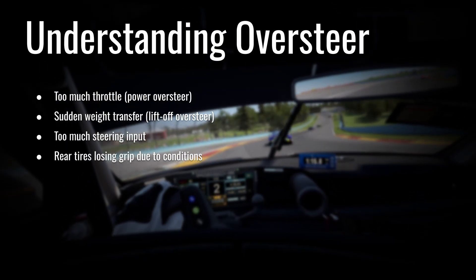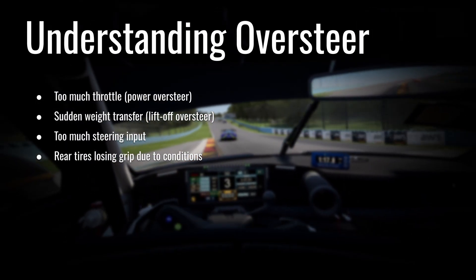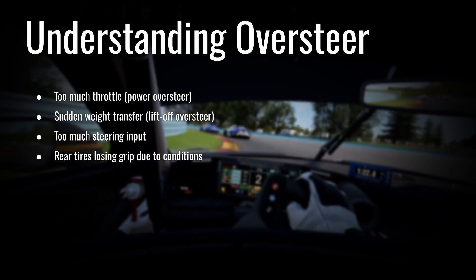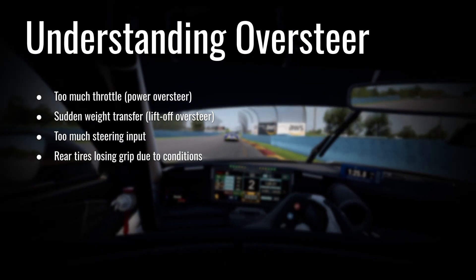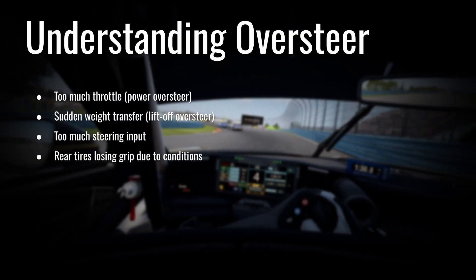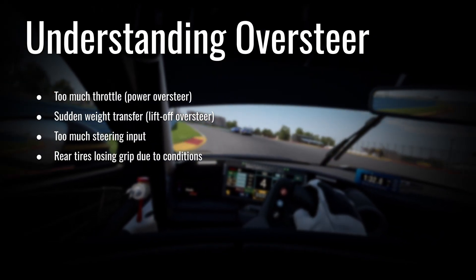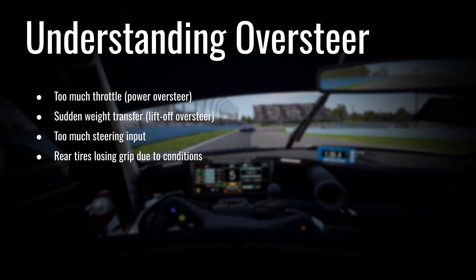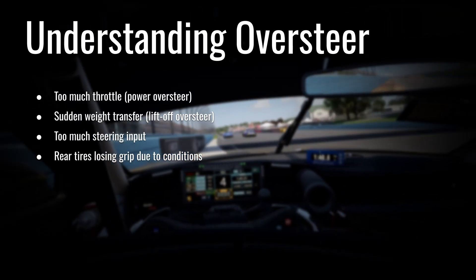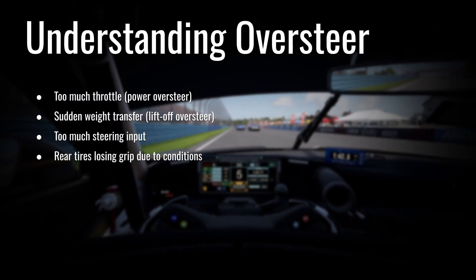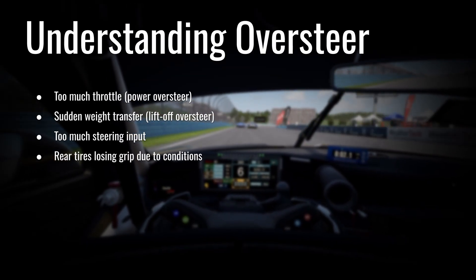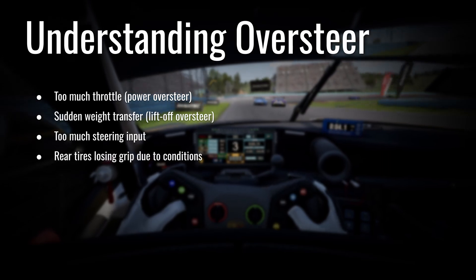Now let's talk about oversteer itself. The rear tires lose grip before the front tires — so how can that occur? There are a few phases. One would be too much throttle: you're coming out of a corner, applying too much throttle, and you end up rotating the car because the tires can't put down all the power being asked of them. You start spinning up those rear tires coming out of the corner — that's called power oversteer.